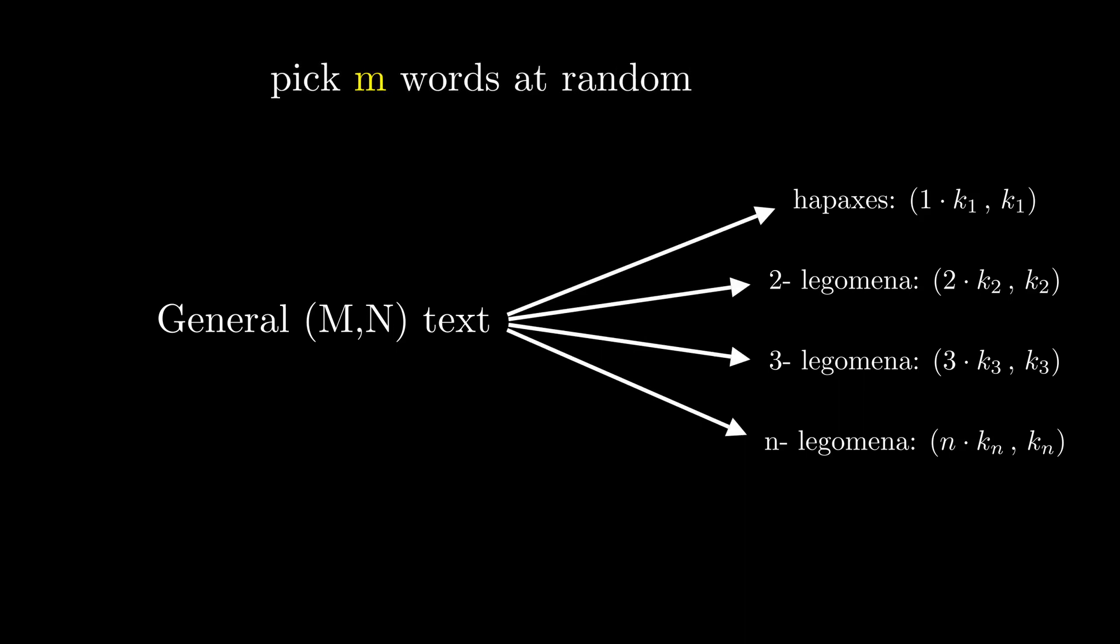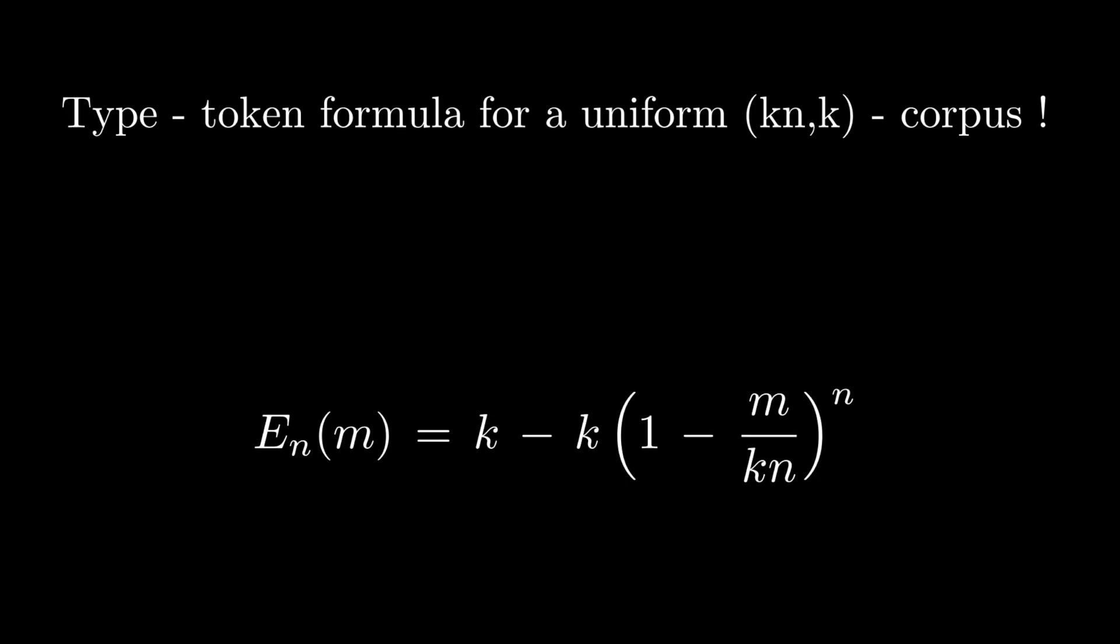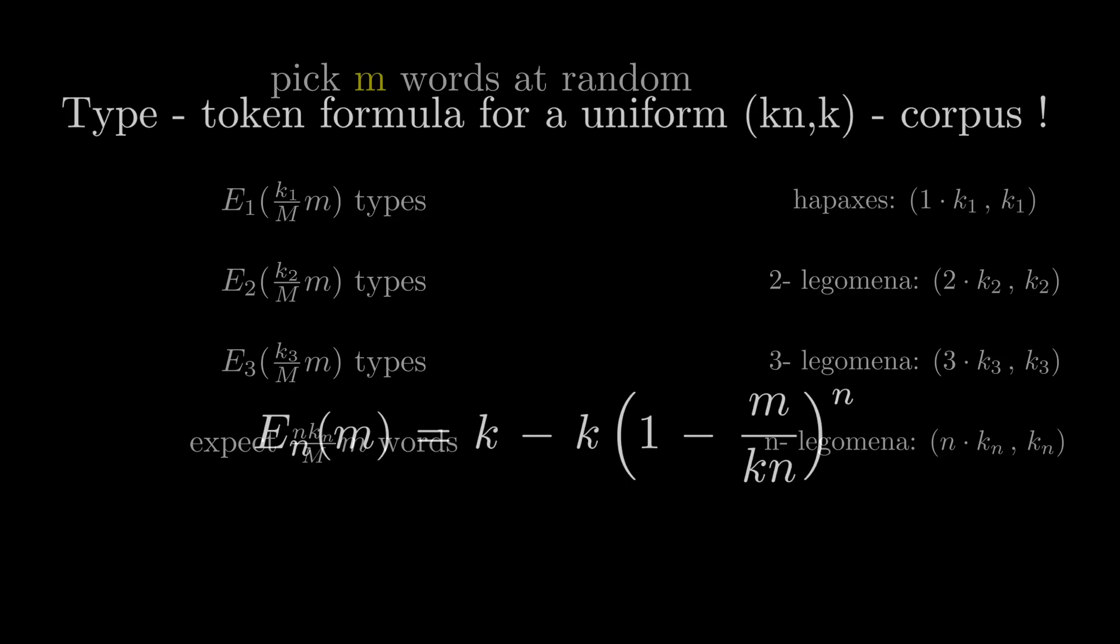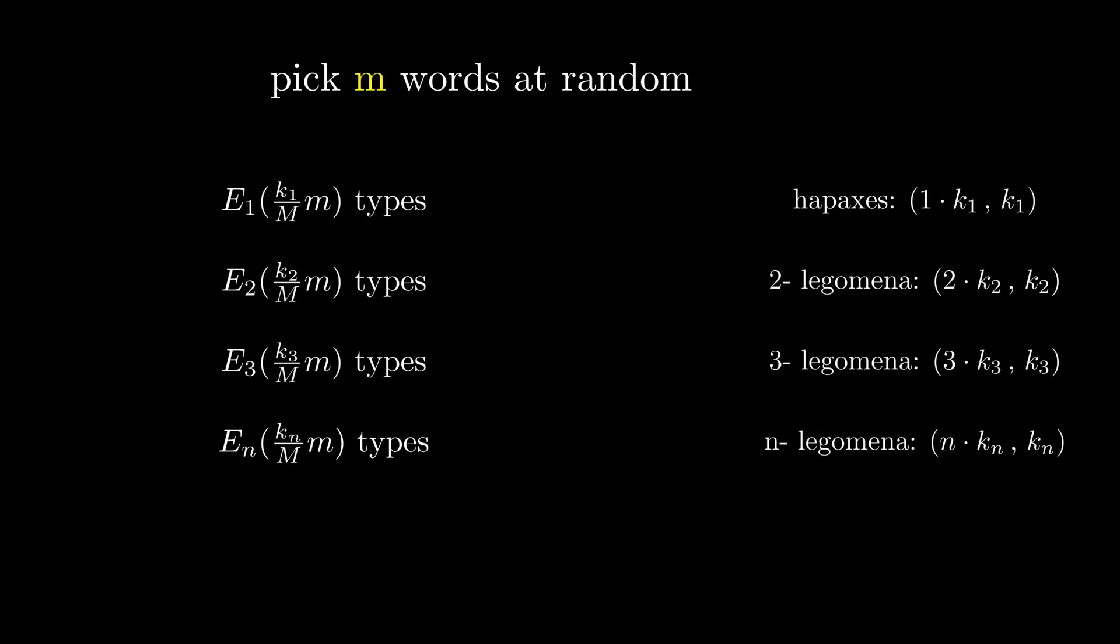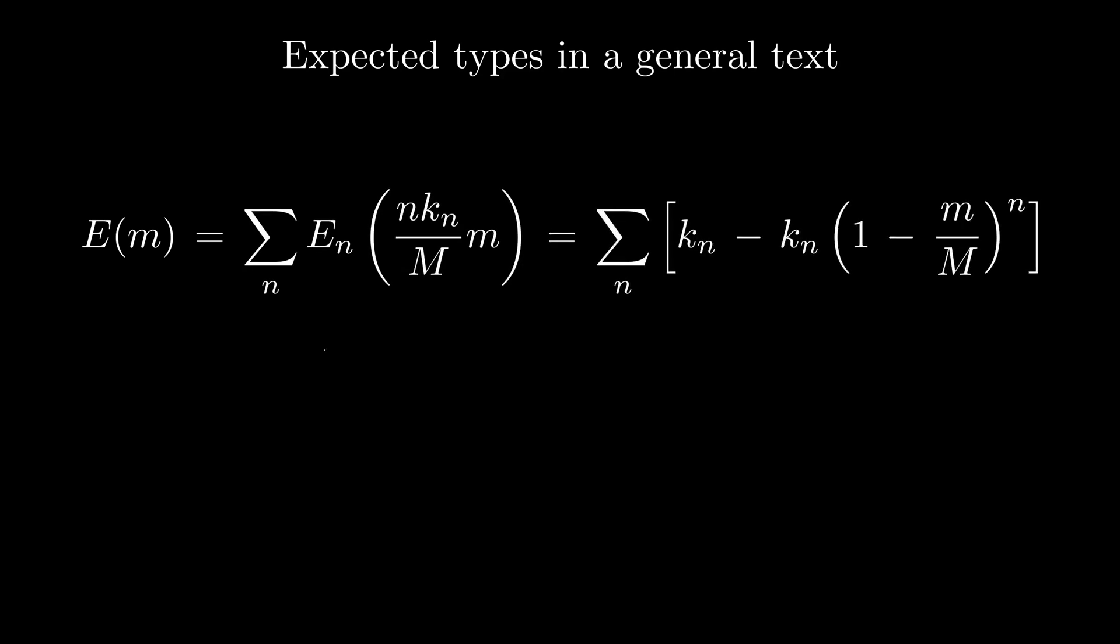Sampling m tokens at random, we expect nkn over m times m tokens from the nth group. And we already know how many types we expect to find from our previous derivation. Thus, for the general text, we need to add all expected values together. All types add up to n.